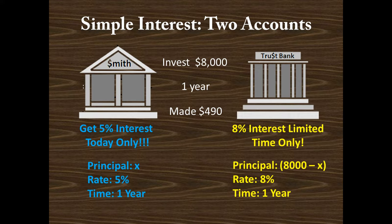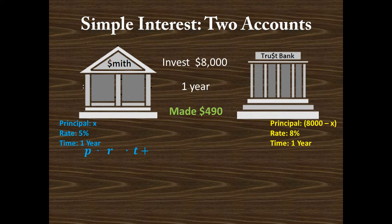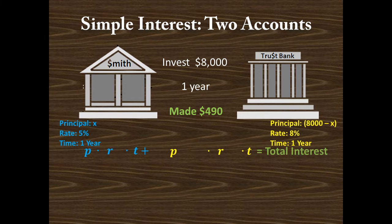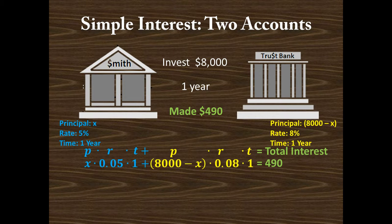Now we'll create an equation using this information. The key values are the principal, rate, and time at each bank, and the total interest of $490. Unpacking the interest equation for Smith Bank: principal is X, rate is 0.05, time is 1 year. For Trust Bank: principal is (8,000 − X), rate is 0.08, time is 1 year. Adding both interest amounts equals $490.